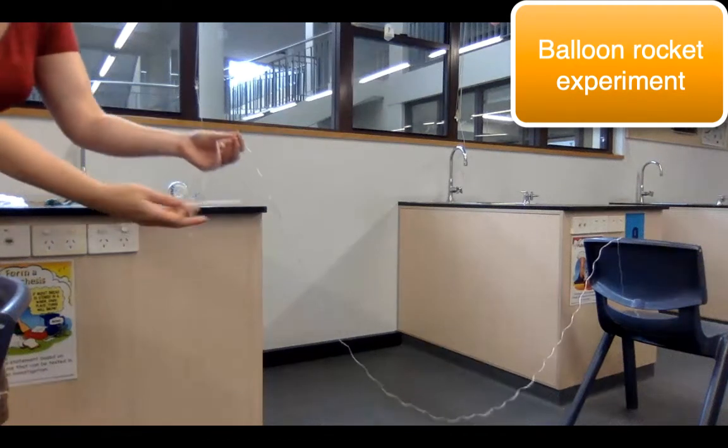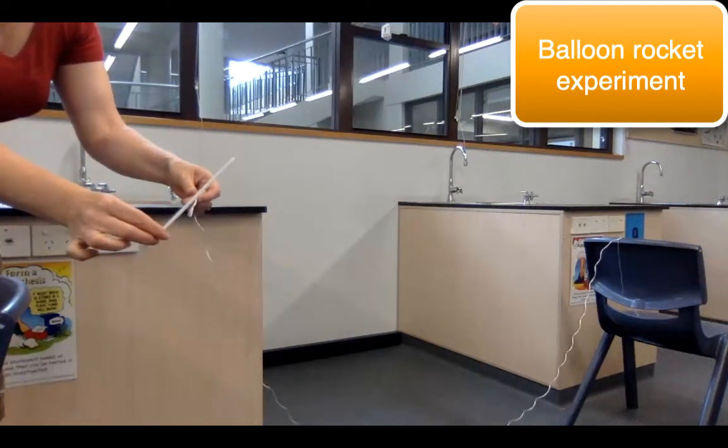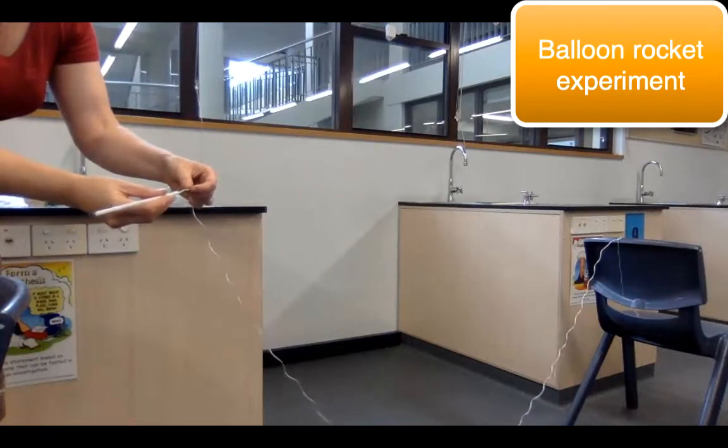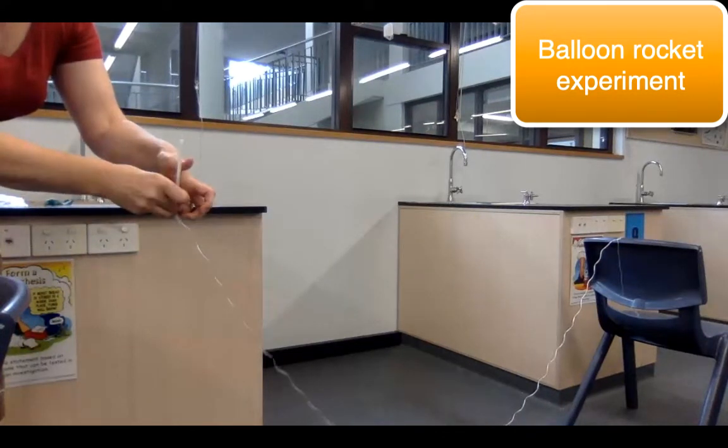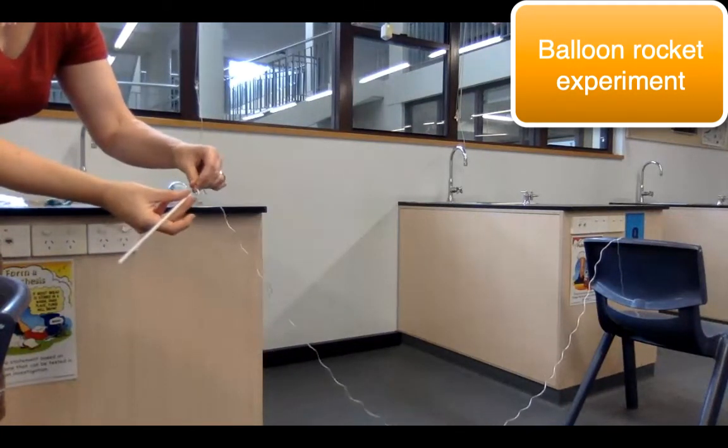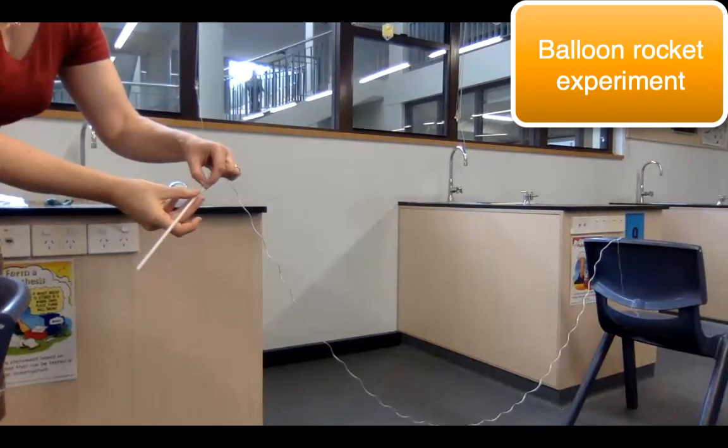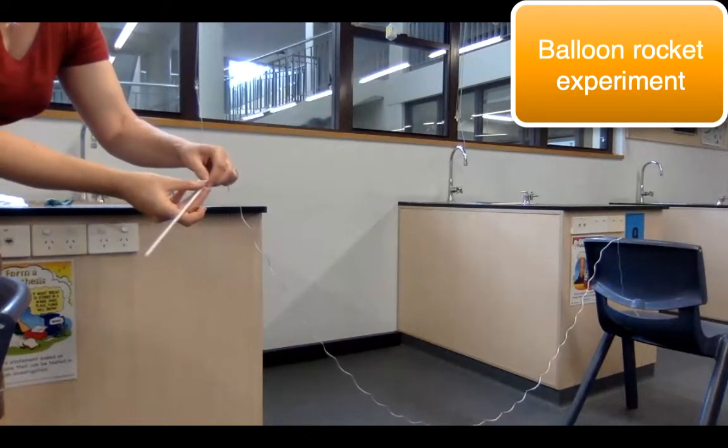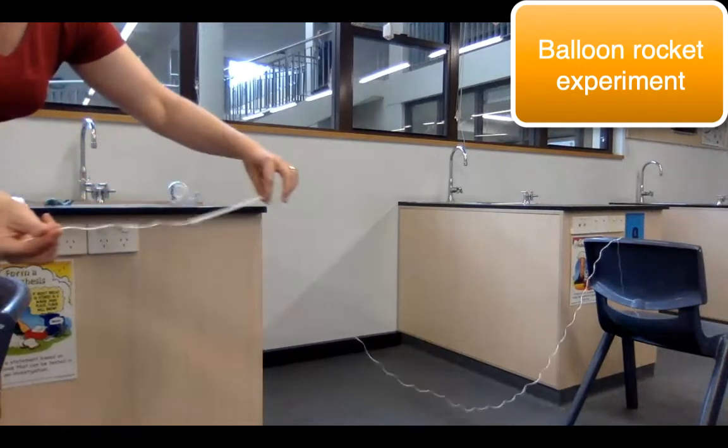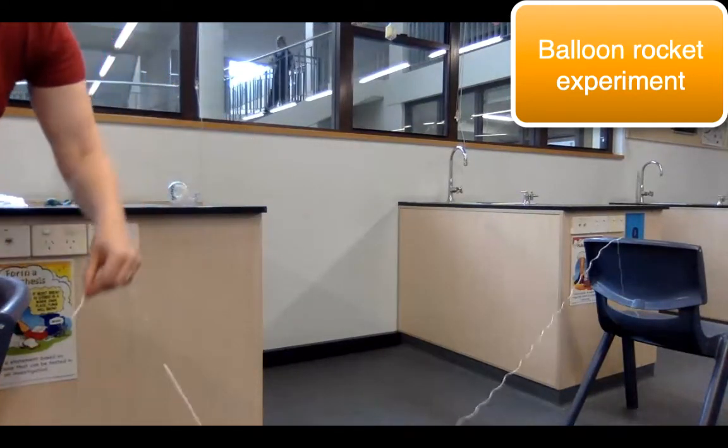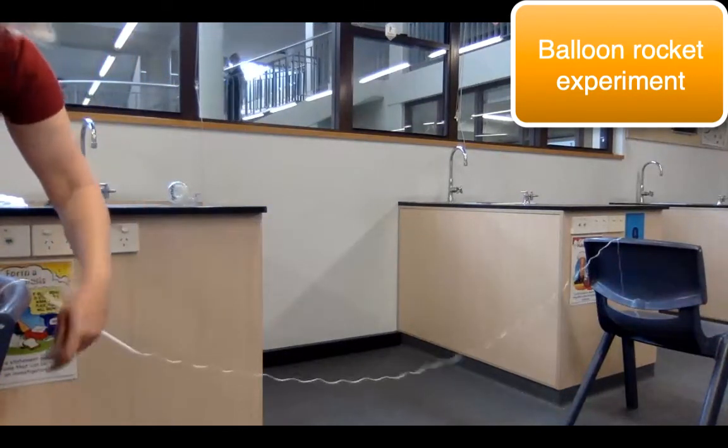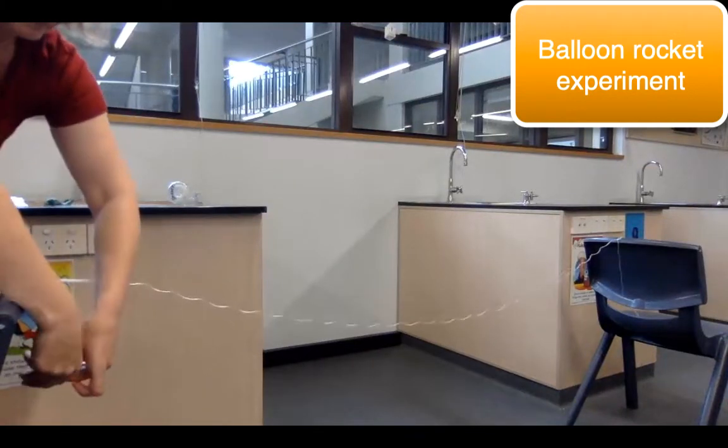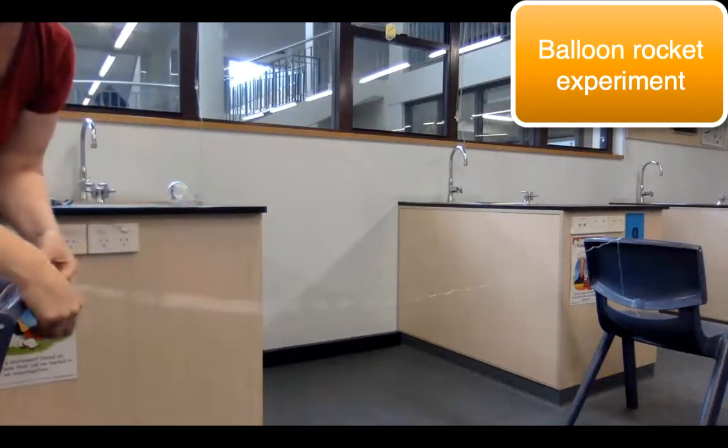We are going to thread a straw onto a piece of string. The string is then going to be stretched between two chairs so that the string is horizontal to the ground and secured tightly around the second chair to make the string taut so we don't get too much friction between the straw and the string.